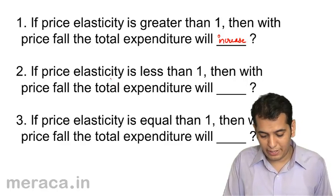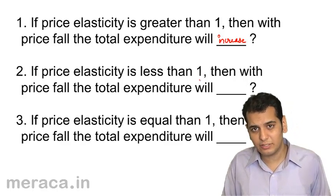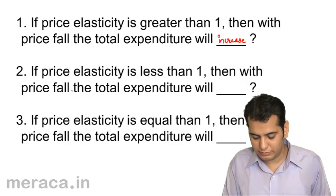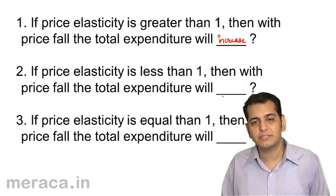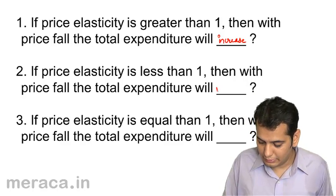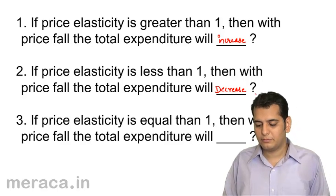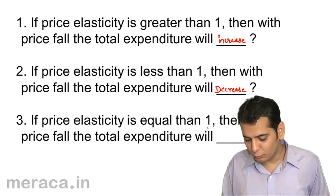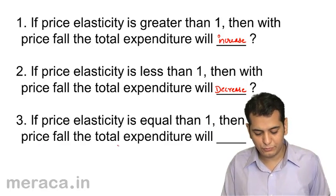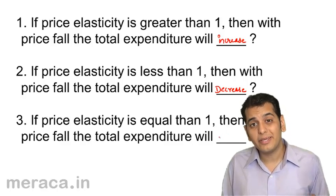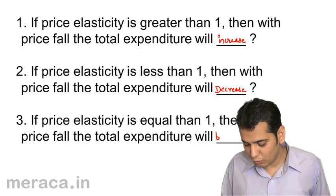Second: if price elasticity is less than 1, then with a price fall, the total expenditure will decrease. Third: if price elasticity is equal to 1, then with a price fall, the total expenditure will remain constant.